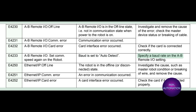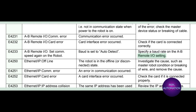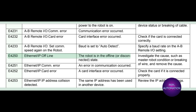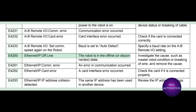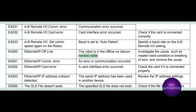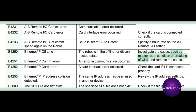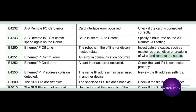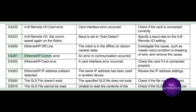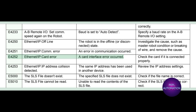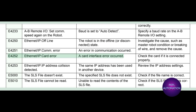E4233 AB remote IO: set com speed again. The robot board is set to auto detect; specify a baud rate on the AB remote IO setting. E4250 Ethernet IP offline: the robot is in the offline or disconnected state. Investigate the cause such as master robot condition or breaking of wire and remove the cause.